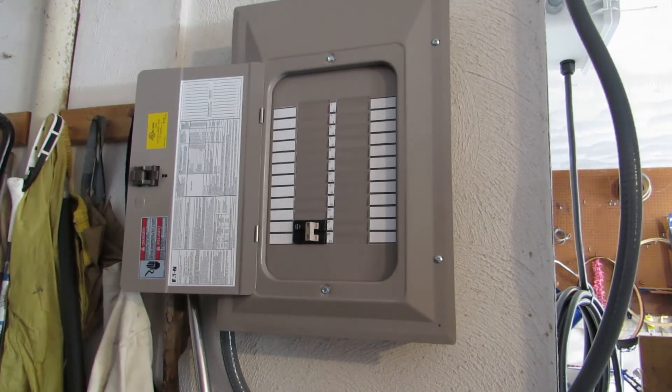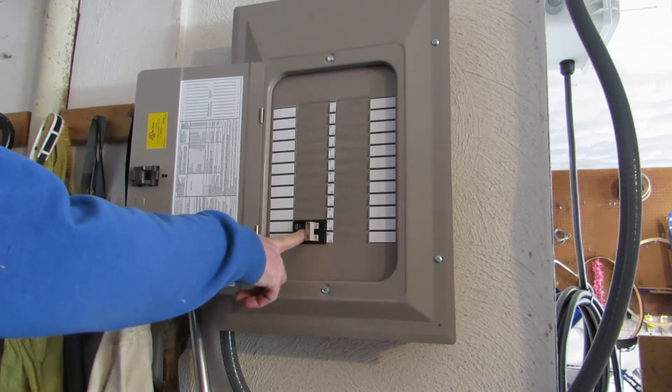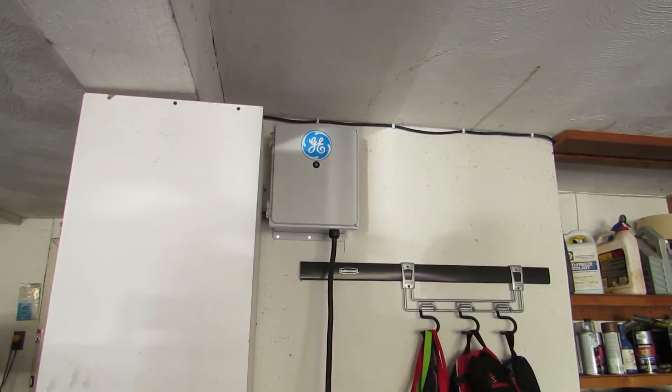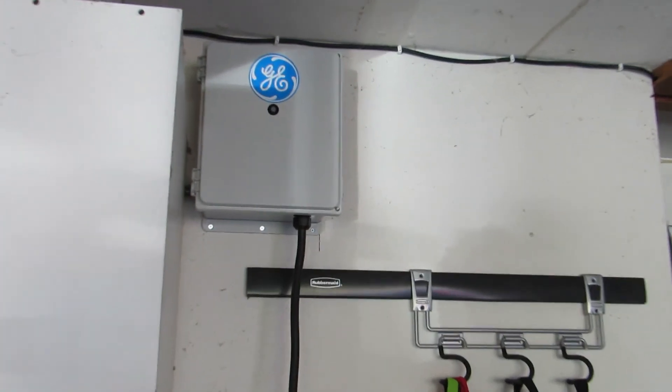After flipping the breaker on the main panel, we can flip this breaker and then we'll go see if the light goes on. Seeing if the light comes on. Oh, look. It's blinking. That's exactly what it's supposed to do.